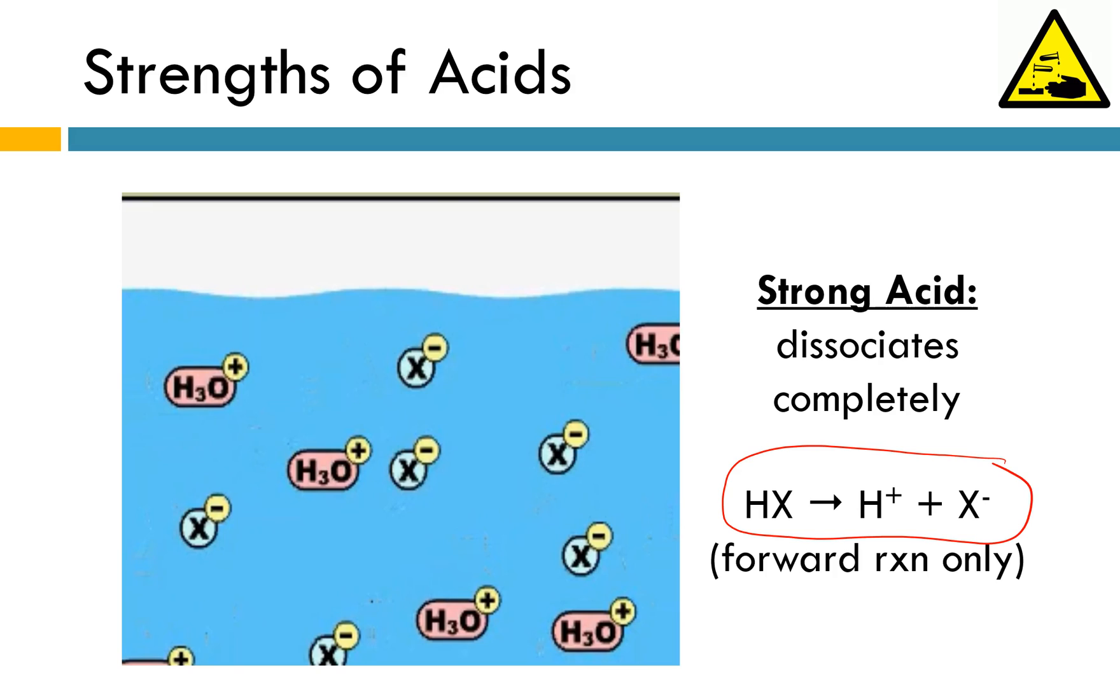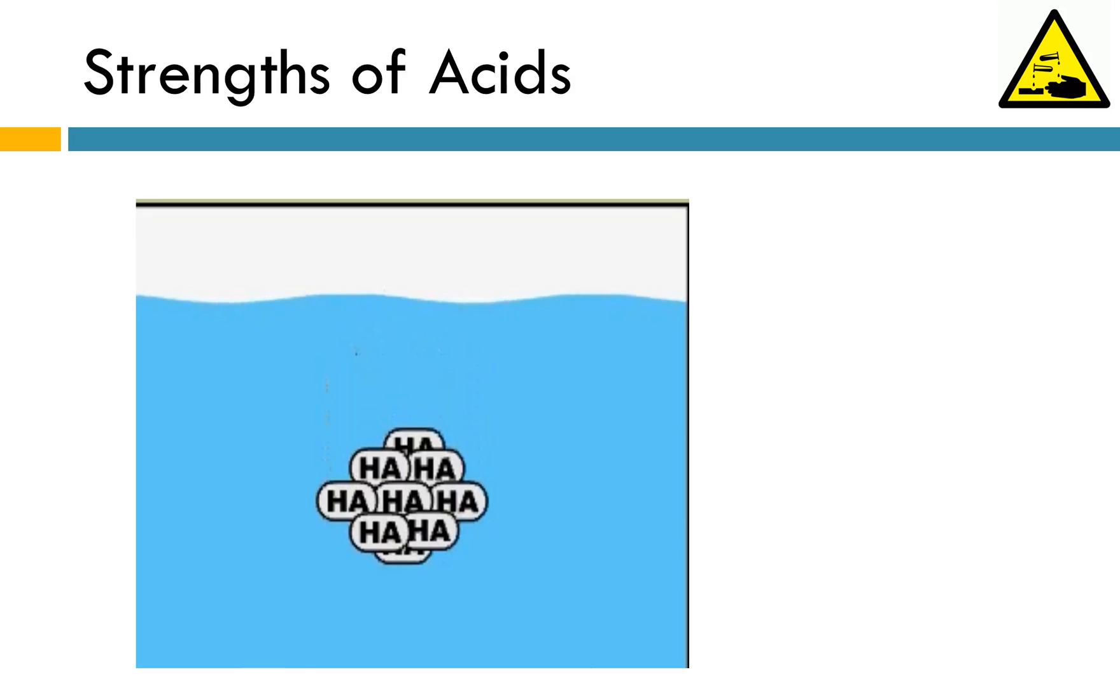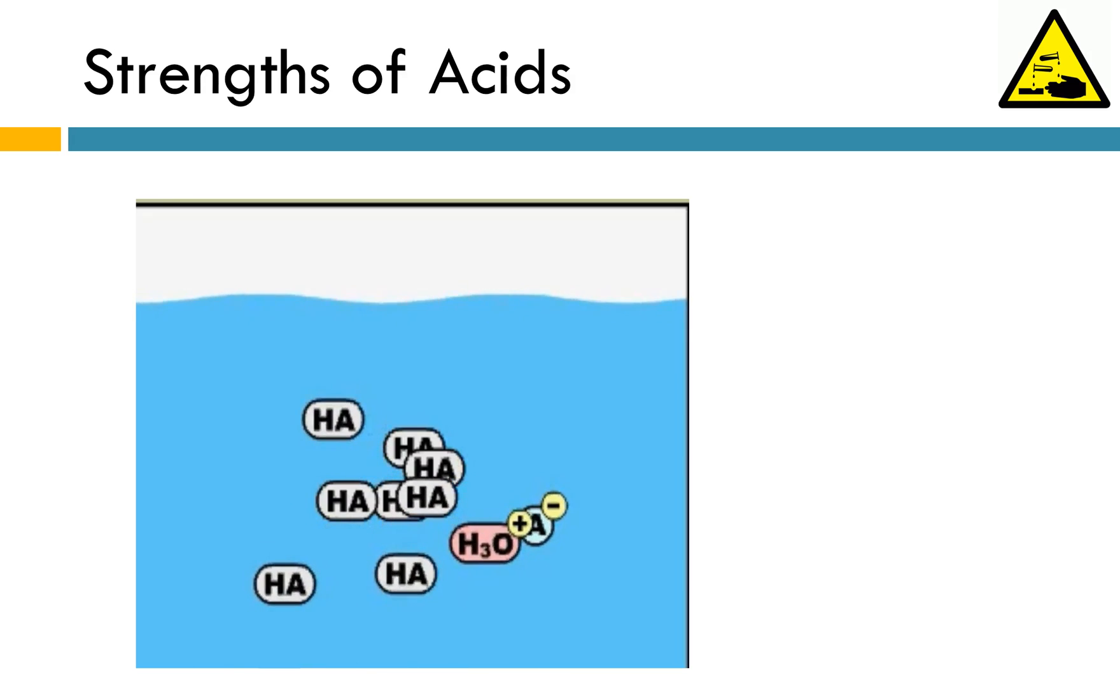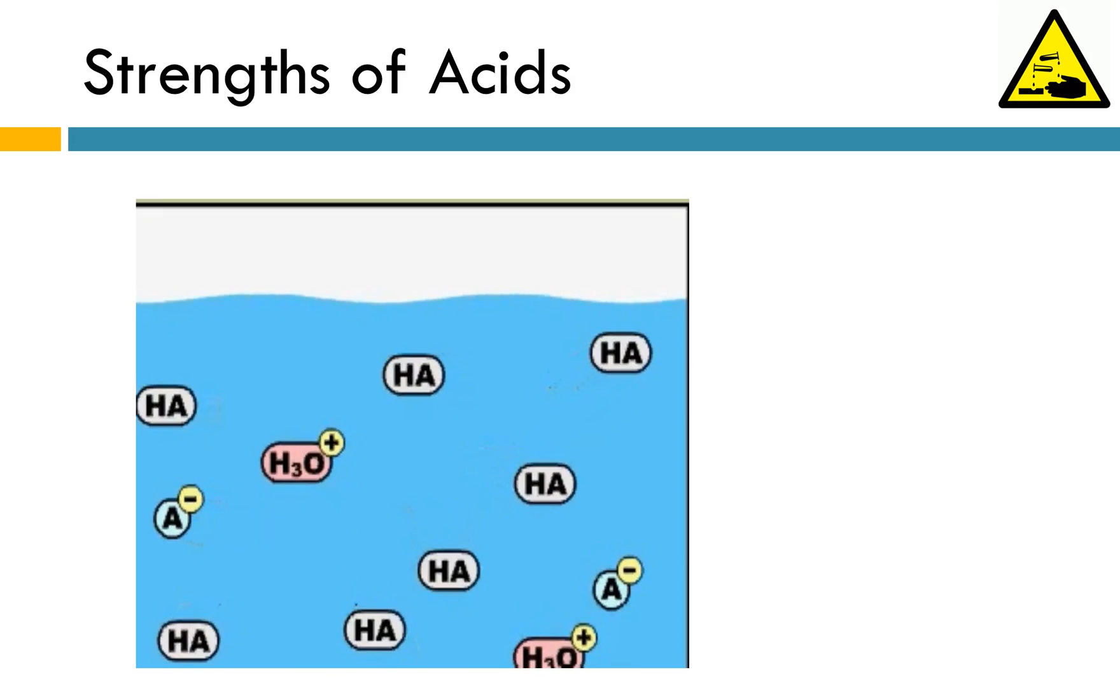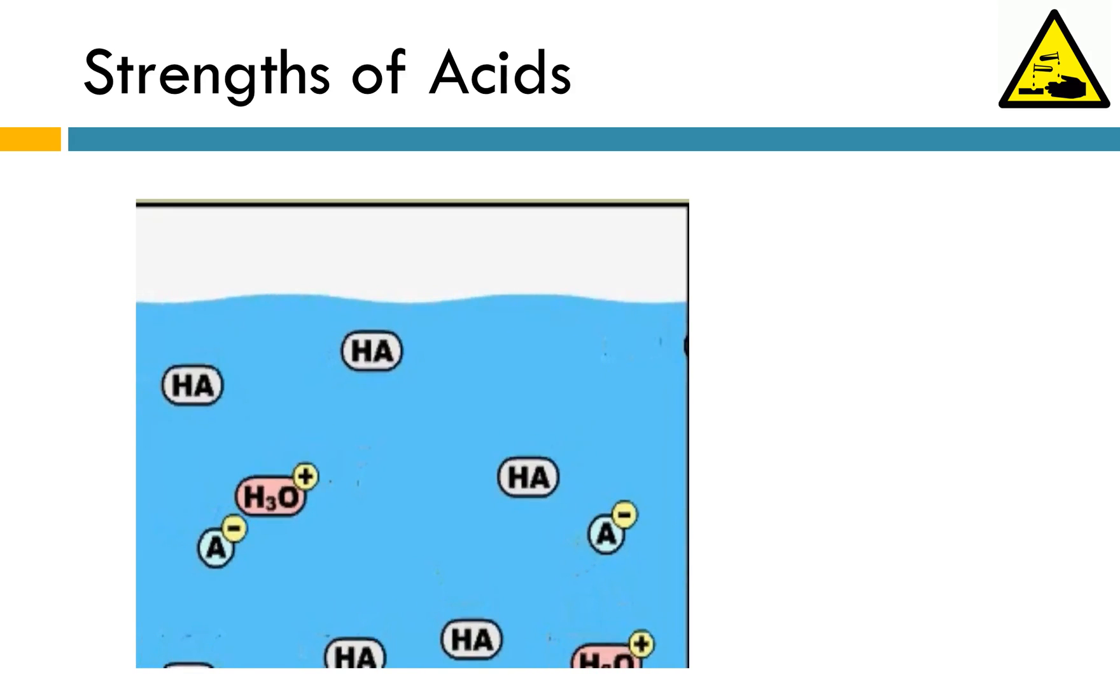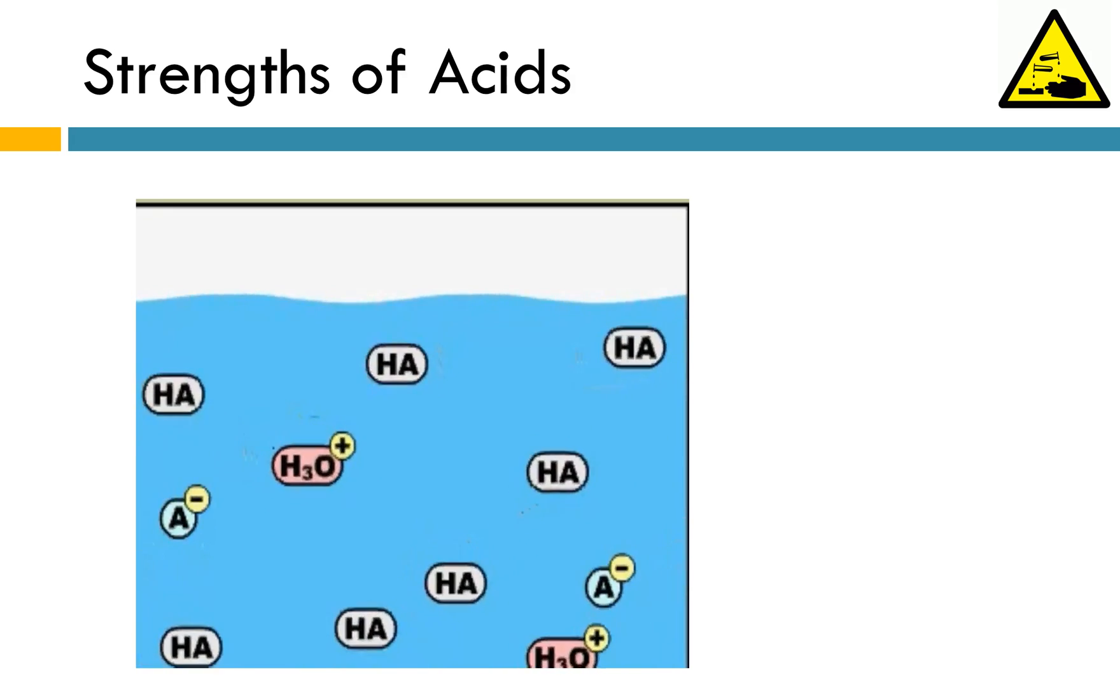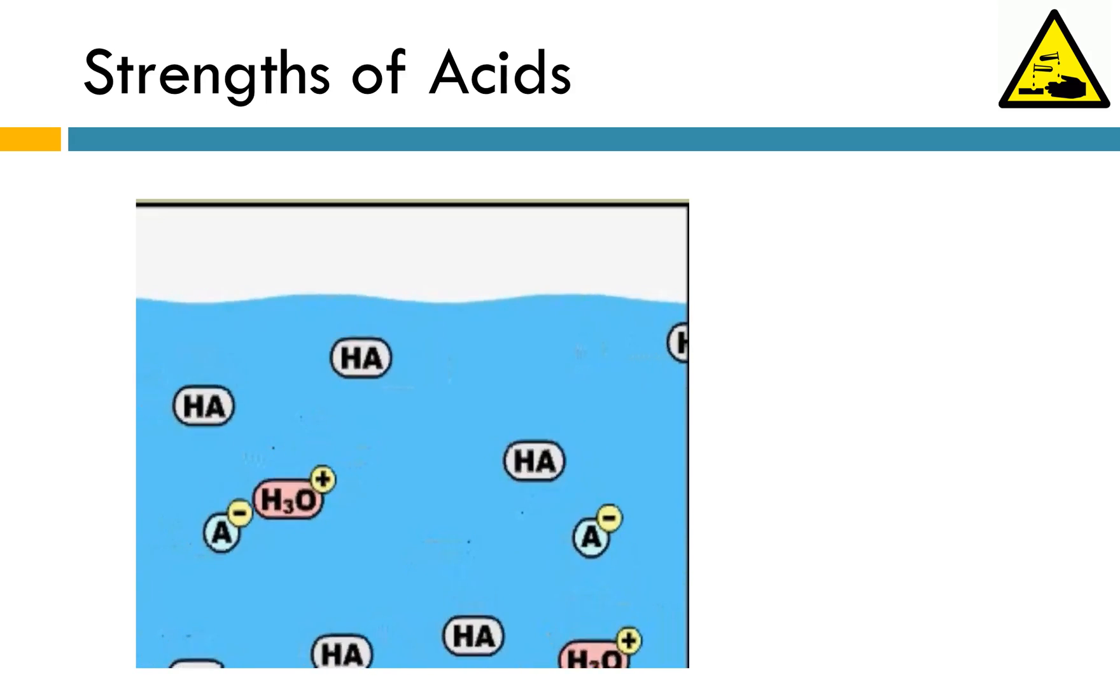Let's look at the next example. We're going to take HA and try dissolving this in water and see what happens. It's starting to break apart. Now we have a lot of HAs just floating around in solution. Some of them have gone ahead and formed H3O+ ions and A- ions, but a lot of them just stay as HA. In this case, we don't have full dissociation. We have partial dissociation.